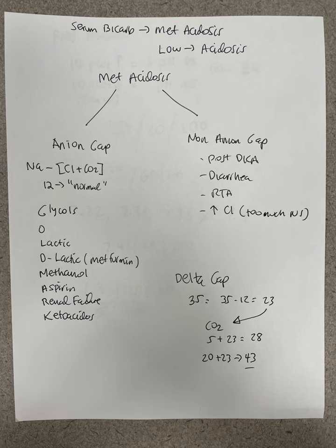Why the serum bicarb? Why not serum chloride or serum sodium? Bicarbonate is the primary buffer in the body, which is why we measure it. When the bicarbonate is low, it means it's being consumed — it's buffering acid. So when the bicarb is low, that's metabolic acidosis, period.